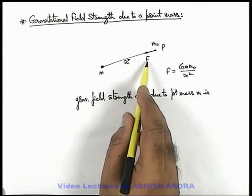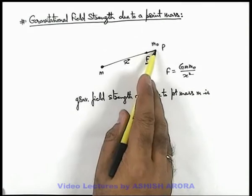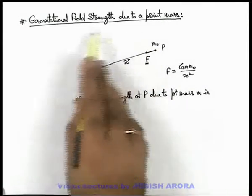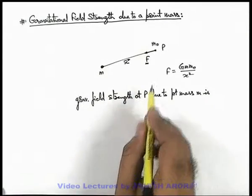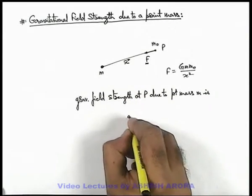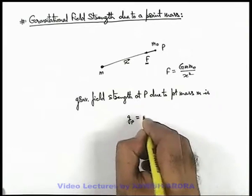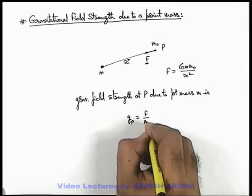We can state that this force is acting on m₀ because m₀ is placed in the gravitational field of this point mass m. So gravitational field at point p due to point mass m can be written as gₚ and this gₚ we can write as F by m₀.